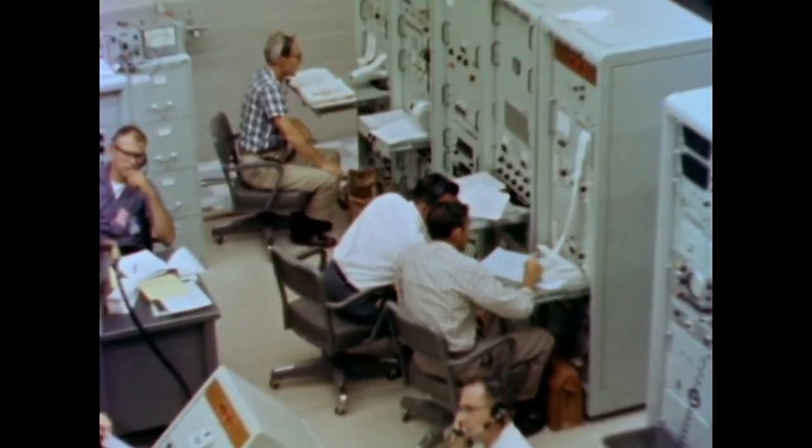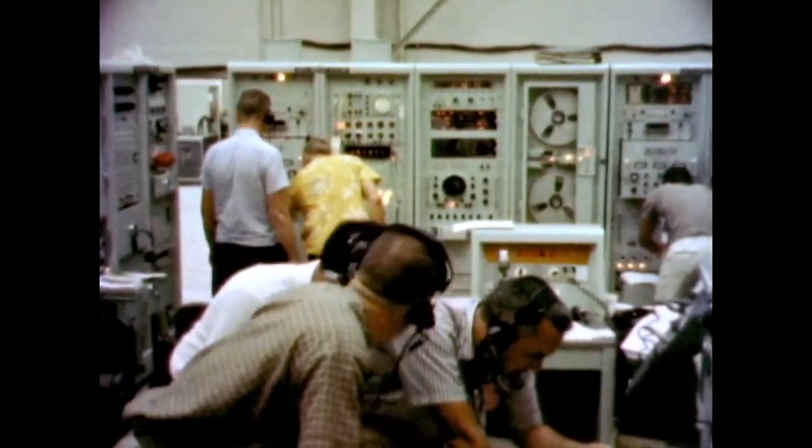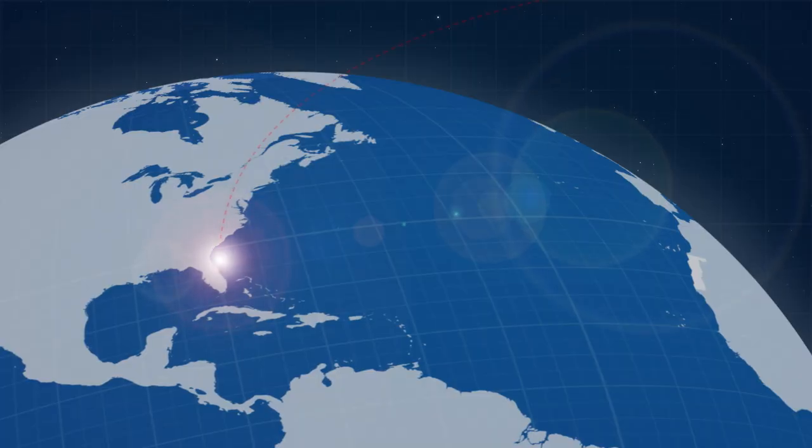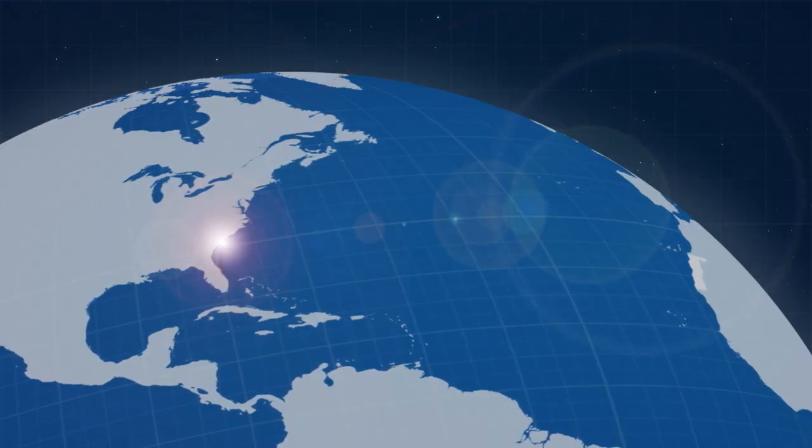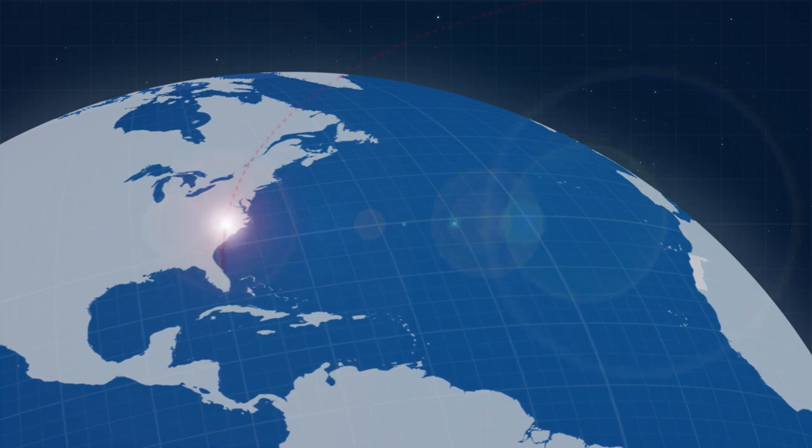On July 22, 1962 Mariner 1 launched from Cape Canaveral on a mission intended to fly by Venus and collect data on its temperature and atmosphere. But just 293 seconds into its flight, the range safety officer gave the command to self destruct the rocket over an unpopulated area of the Atlantic, seeing that its trajectory was taking it to a crash landing possibly in busy shipping lanes or land.